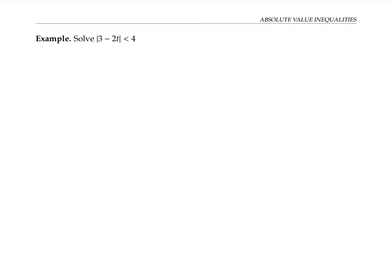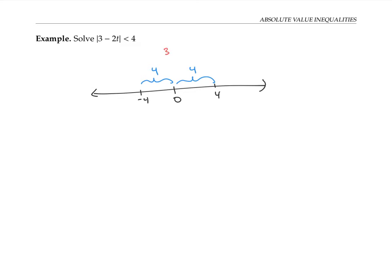Let's take this analysis a step further with a slightly more complicated problem. Now I want the absolute value of three minus two t to be less than four. An absolute value less than four means a distance less than four on the number line. But it's not the variable t that lives in here at a distance of less than four from zero — it's the whole expression, three minus two t. So three minus two t lives somewhere in here, and I can rewrite this as an inequality without absolute value signs by saying negative four is less than three minus two t is less than four. Now I have a compound inequality that I can solve the usual way.